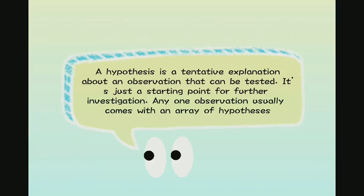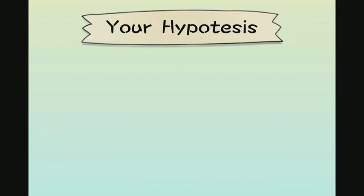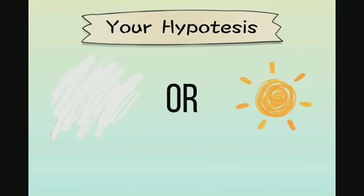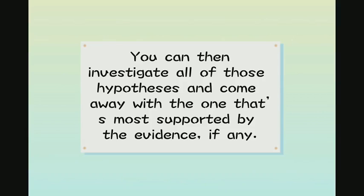Any one observation usually comes with an array of hypotheses. If you observe that a swan is white, your hypothesis could be that it's painted, or it was bleached by the sun, or its feathers just lack pigment. You can then investigate all of these hypotheses and come away with the one that's most supported by the evidence, if any.